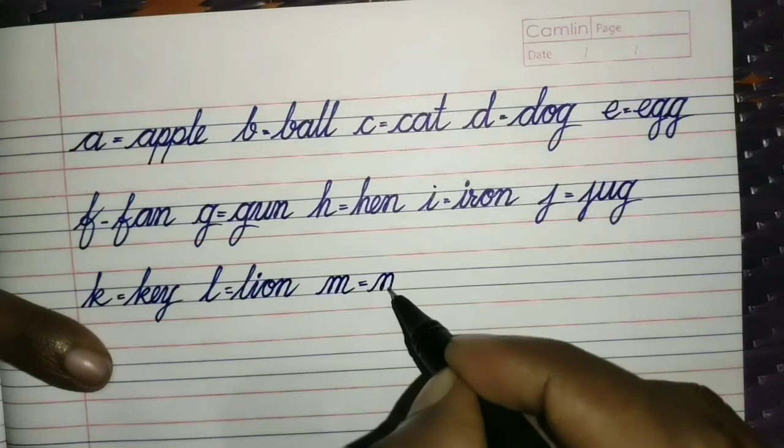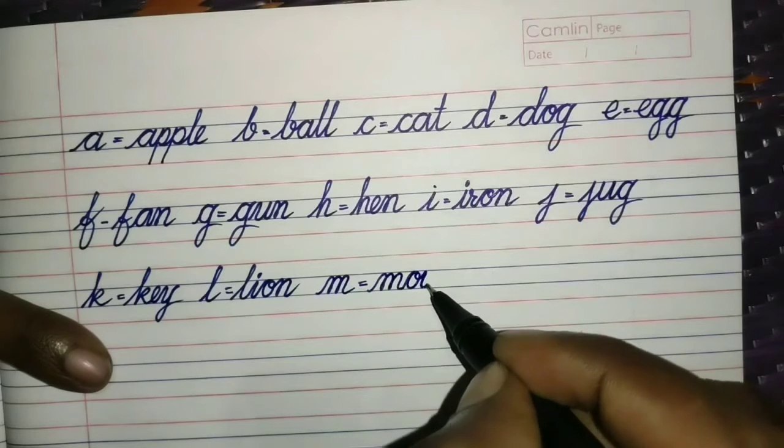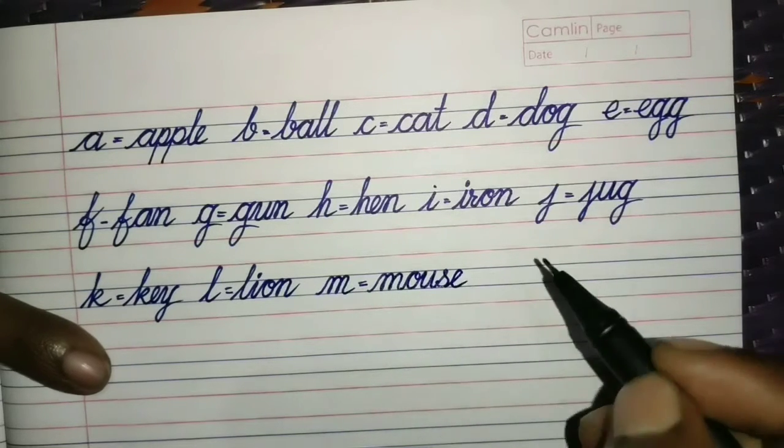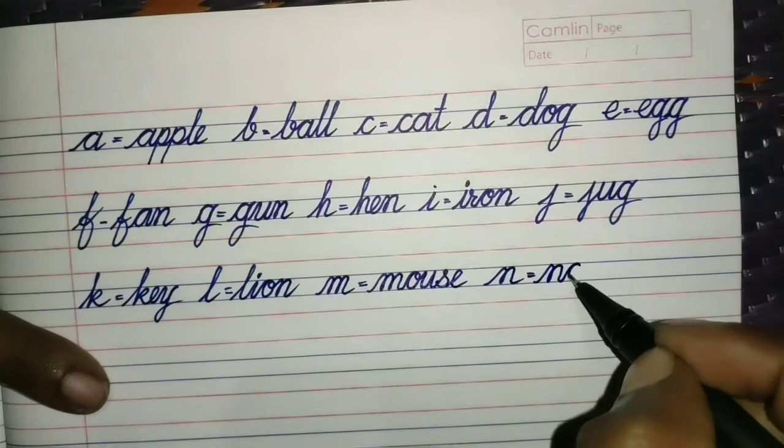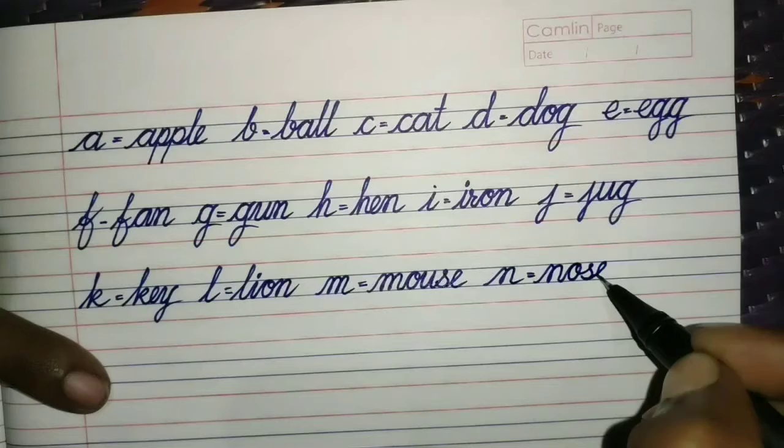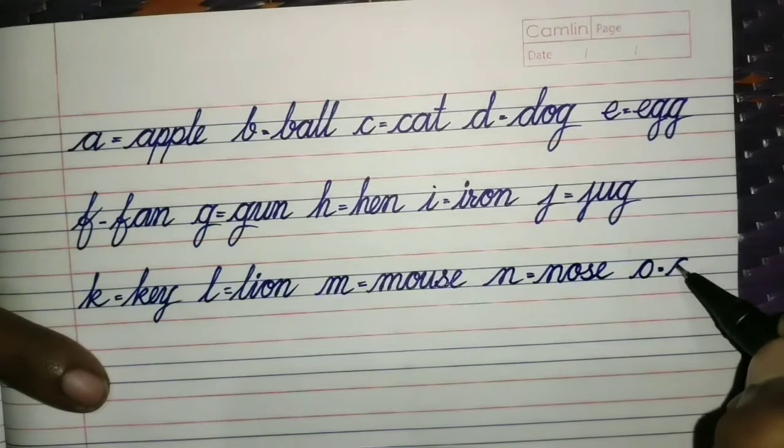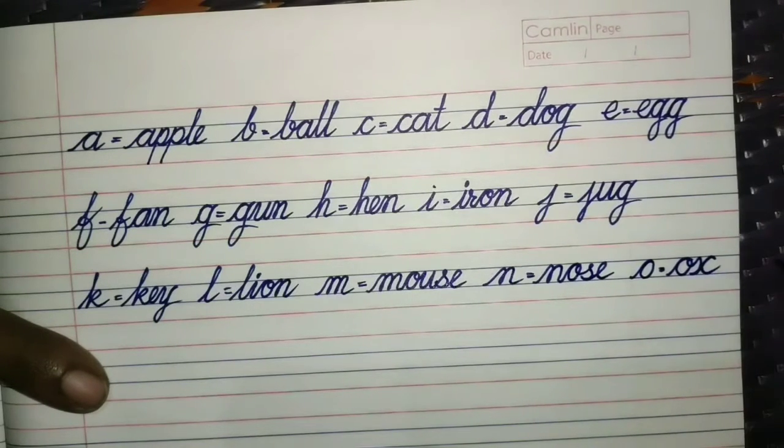M for Mouse. M, O, U, S, E. Mouse. N for Nose. N, O, S, E. Nose. O for Ox. O, X. Ox.